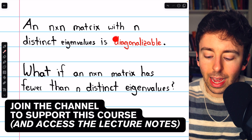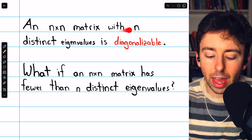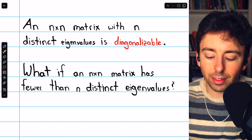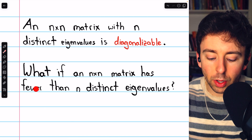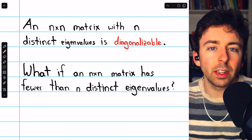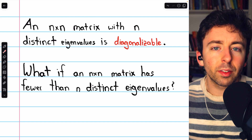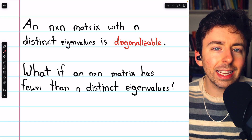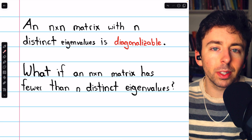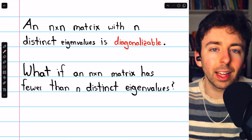In a previous video where we introduced diagonalizable matrices, we saw how an n by n matrix with n distinct eigenvalues is guaranteed to be diagonalizable. But what if an n by n matrix has fewer than n distinct eigenvalues? Is it still possible that such a matrix is diagonalizable? The answer is yes — it's possible that one or more of the eigenvalues have multiple linearly independent corresponding eigenvectors, and so there still may be enough eigenvectors to diagonalize the matrix.